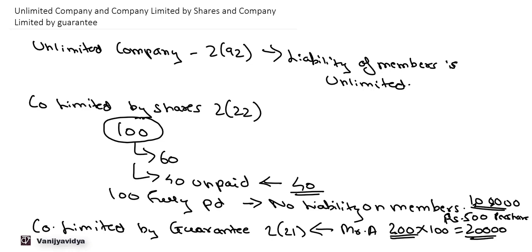So this was about what is an unlimited company, what is a company limited by shares, and what is a company limited by guarantee.